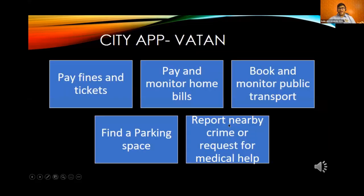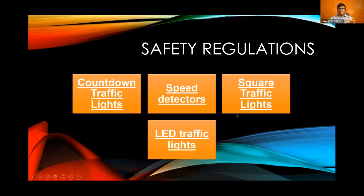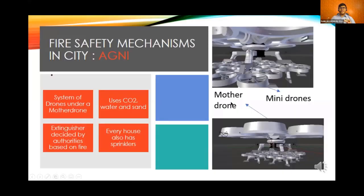Regarding the city app, you can also pay and monitor all your home bills, and find a parking space — a concept currently implemented in San Francisco using street sensors. For safety regulations on streets, we have four features. For fire safety, we use a system of drones which reduces human risk to life, increases system longevity, provides more options for extinguishers, and enables faster, more efficient responses.